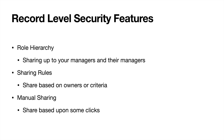There are three main record level security features you're going to be using, and these work in conjunction with object level security. If you have record level access, you're not going to be able to see a record unless you also have access to the object. These three features determine which individual records you can see on leads, accounts, contacts, or whatever object you're working on.